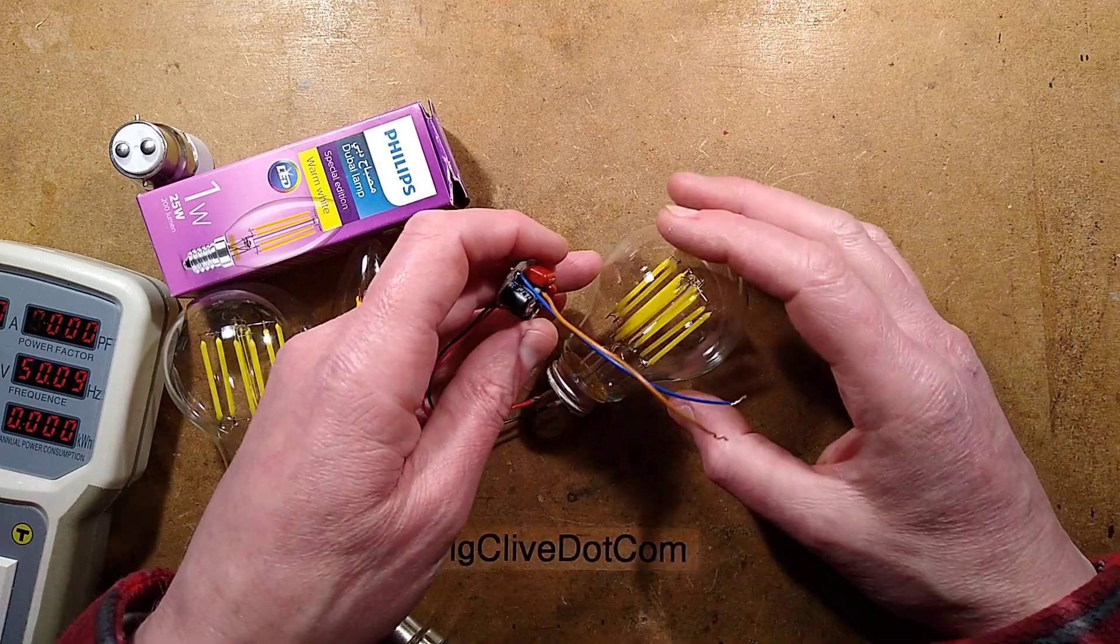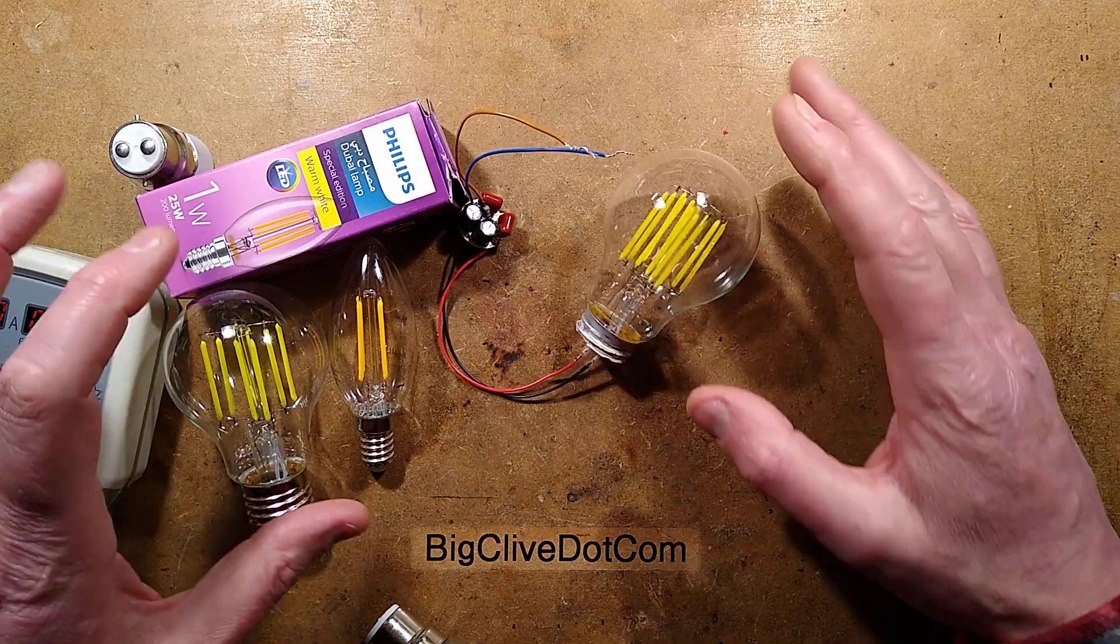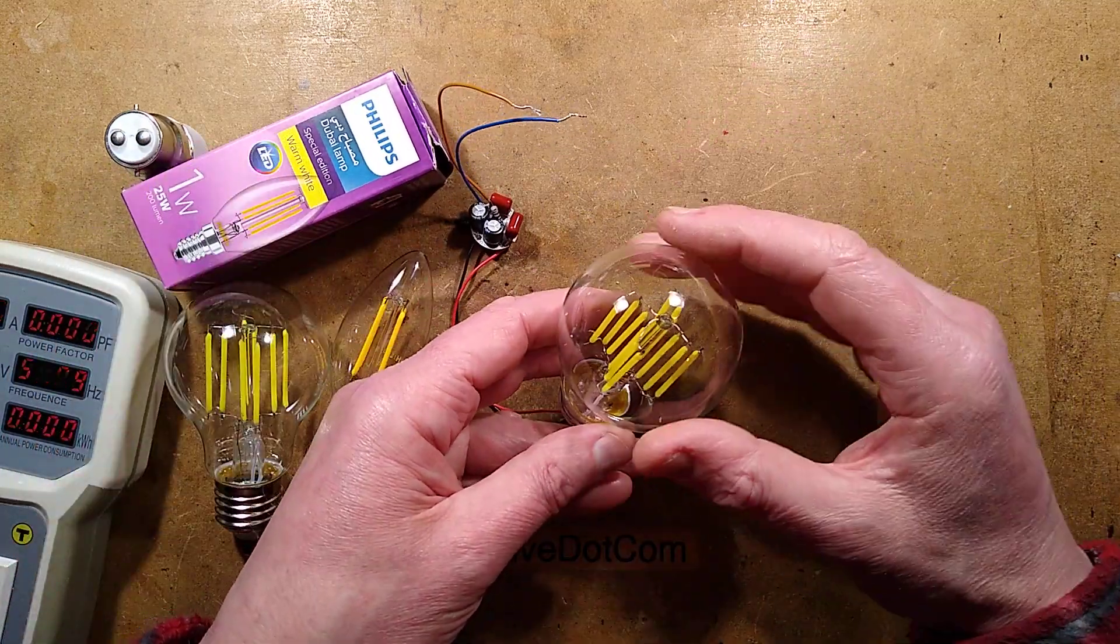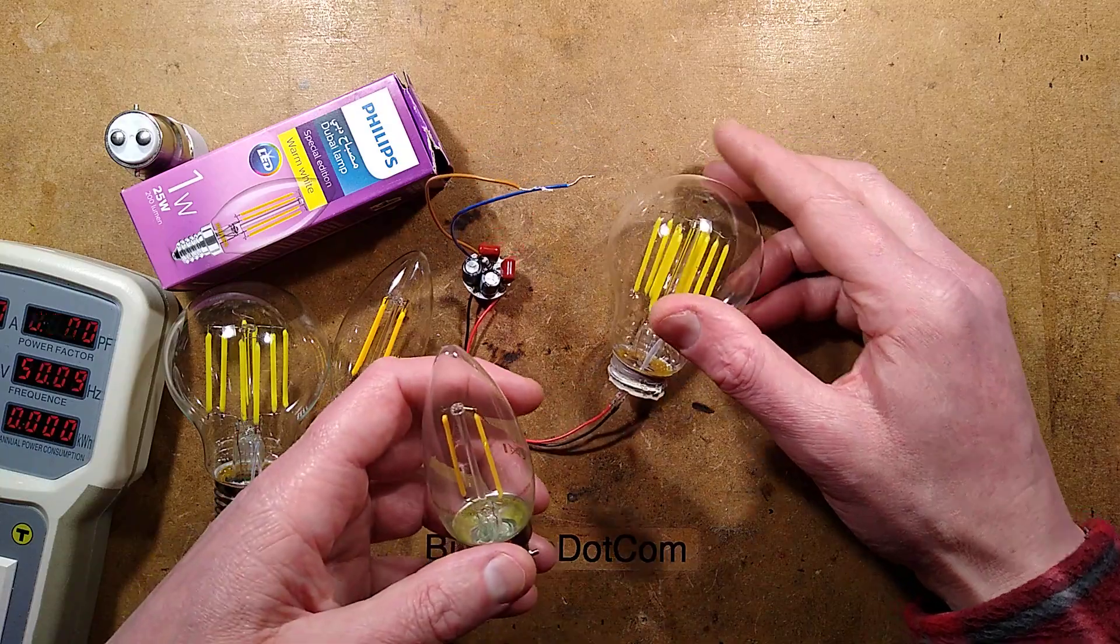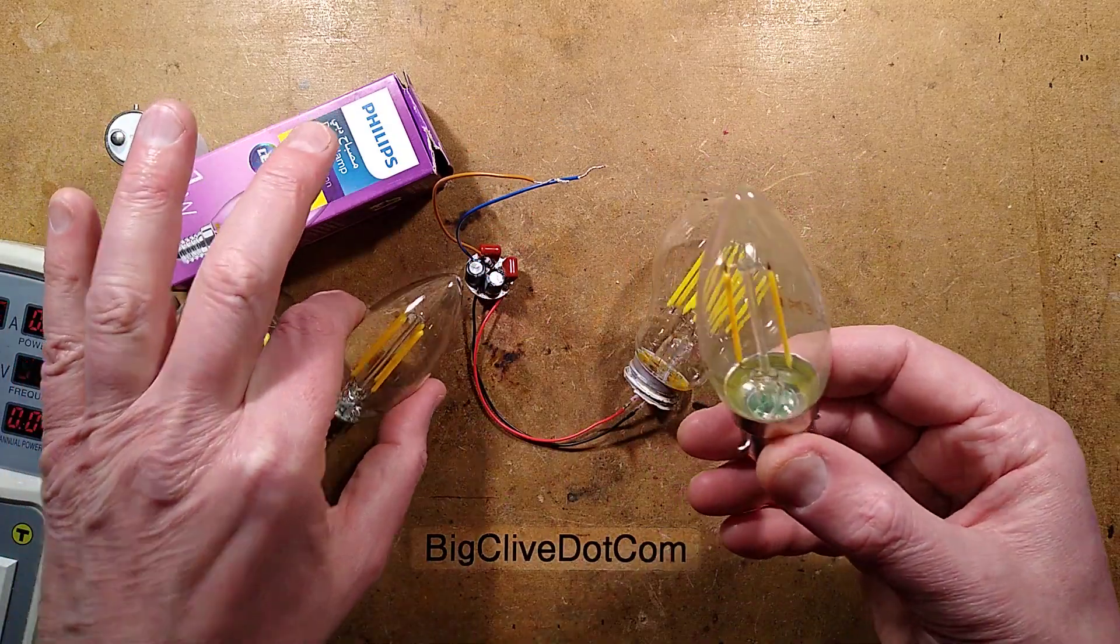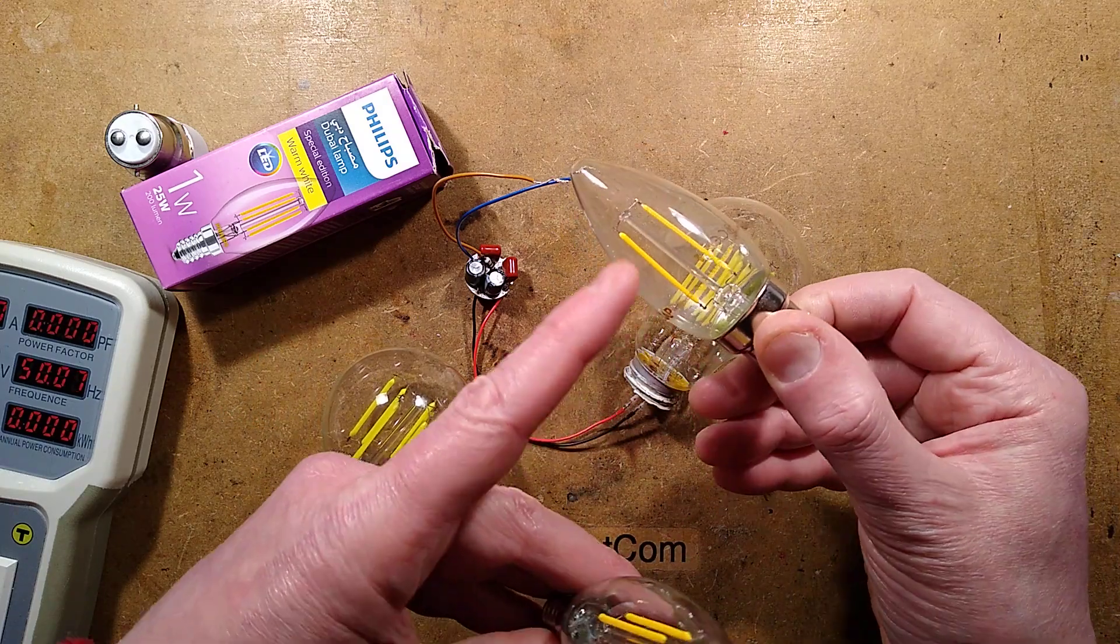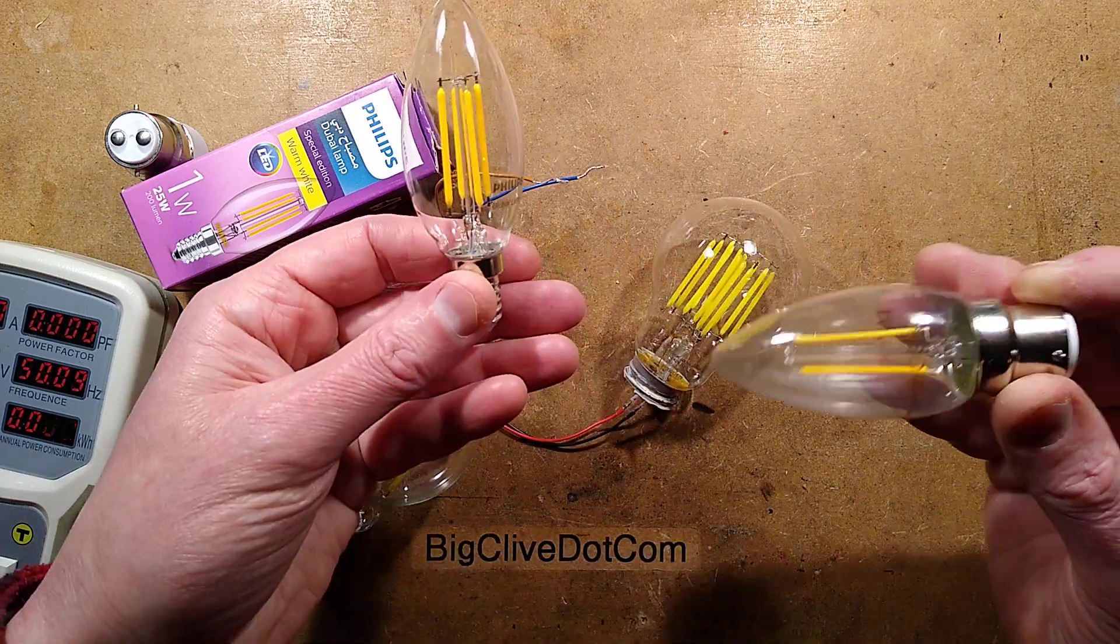The main feature that makes these special is that they use four times as many LED filaments as a typical lamp available to the rest of us. So for instance, this is the type of lamp we'd get: a 2-watt lamp with two filaments, one watt each.